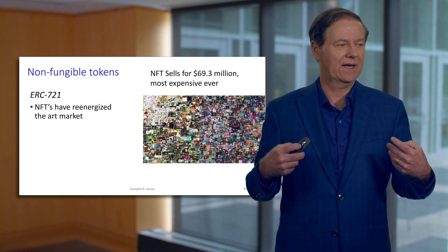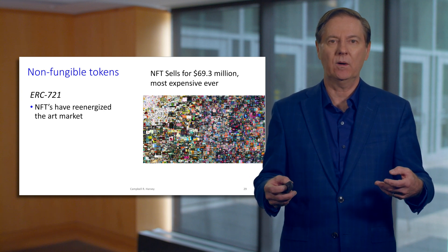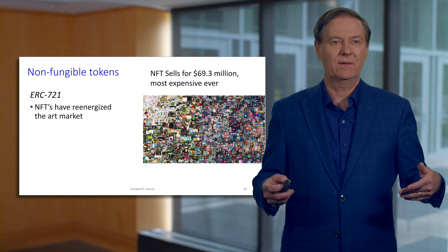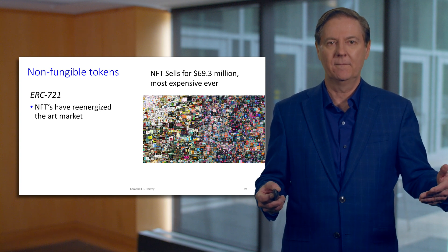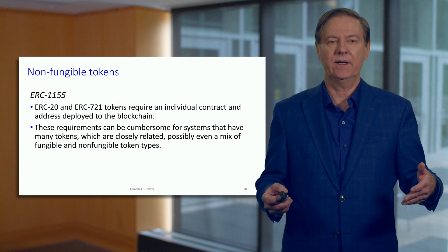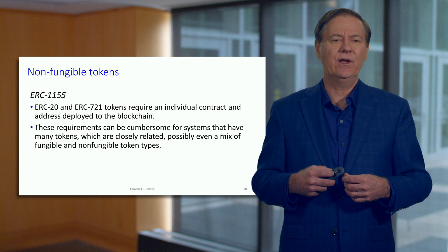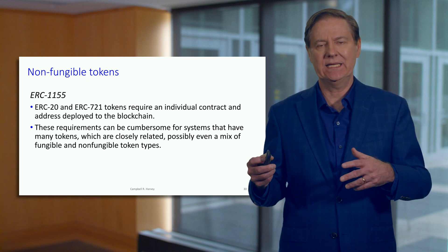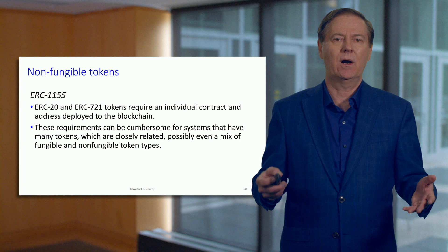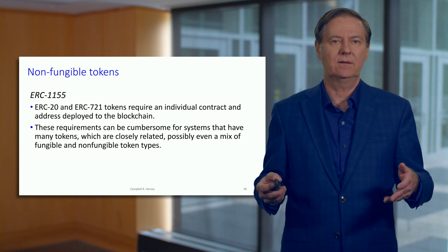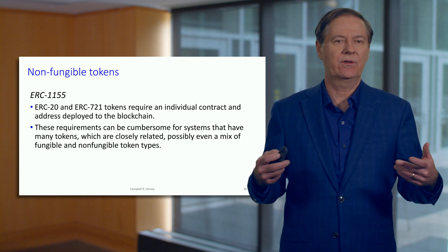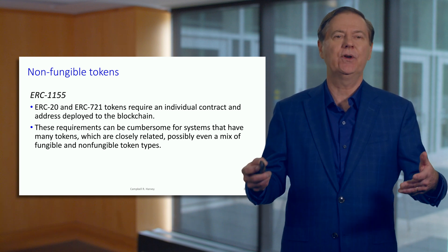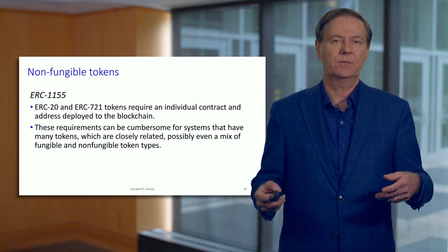A very interesting application is in the gaming world, where there's a lot of untapped value. Gamers are often very sophisticated in terms of technology, so it seems a natural area to go. There is also something called ERC-1155. With ERC-20 and ERC-721, each requires an individual contract to be deployed on a blockchain, which can be cumbersome if you have many tokens. ERC-1155 allows you to have a mixture of fungible and non-fungible token types.